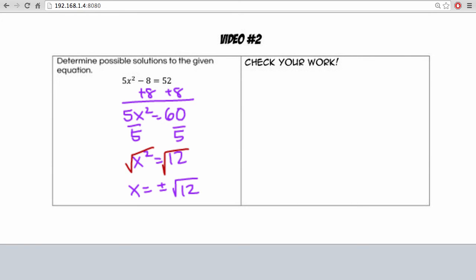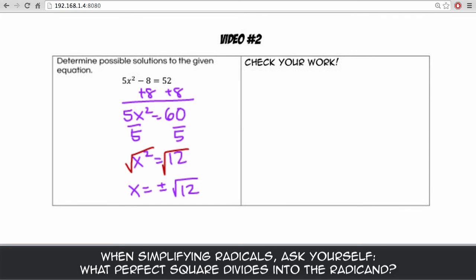Now we can simplify the square root of 12 a little bit more. We want to think about what two numbers multiply to get to 12. One of them should be a perfect square. And keep in mind our perfect squares are going to be numbers like 1, 4, 9, 16,